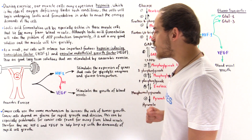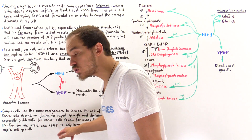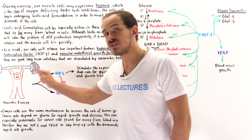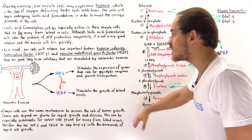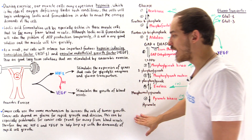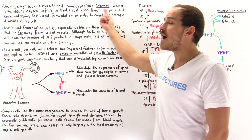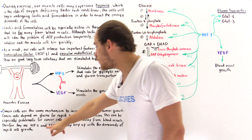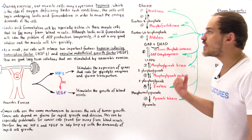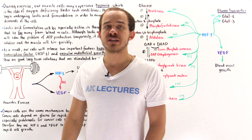Cancer cells use the same mechanism to increase the rate of tumor growth. Cancer cells depend on glucose for rapid growth and division. This is especially problematic for cells found far away from blood vessels, since blood vessels bring glucose to those cells. To adapt and survive under hypoxic conditions, cancer cells use HIF-1 and VEGF to help meet their high energy demand and allow for rapid growth and proliferation.